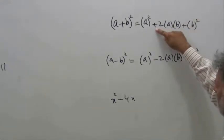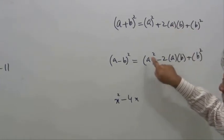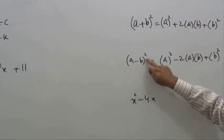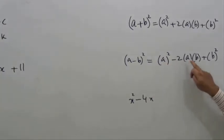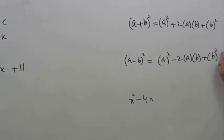If here is a negative sign, then the formula is (a - b) squared, which is the square of the first term minus 2 times first term times the second term plus square of the second term.